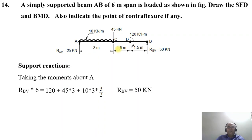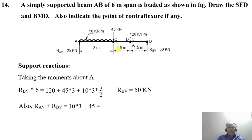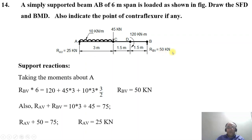On simplification, RBV equals 50 kilonewton. Also, the sum of vertical reactions acting upwards equals the sum acting downwards, so RAV plus RBV equals 10 into 3 plus 45, which equals 75. Therefore RAV equals 75 minus 50, which gives RAV equal to 25 kilonewton and RBV equal to 50 kilonewton.